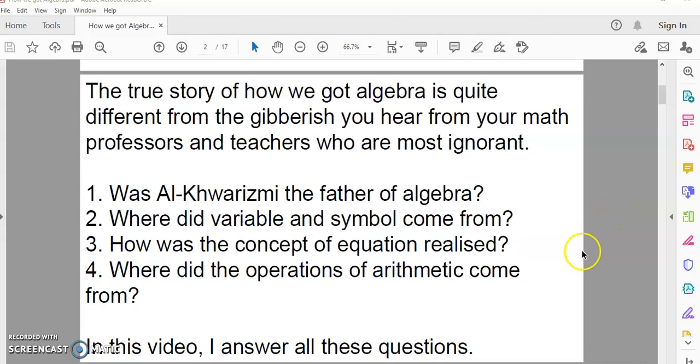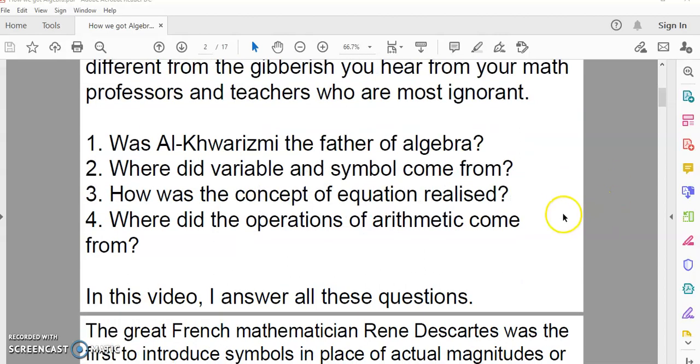Was Al-Khwarizmi the father of algebra? Because one of the misstatements or claims is that Al-Khwarizmi was the father of algebra. And it's not true. It's actually blatantly false. But we'll get to that in a moment. Where did variable and symbol come from? Where did x's and y's and pi and e and square root 2 come from? How was the concept of equation realized? And where did the operations of arithmetic come from? I'll attempt to answer all these questions now.